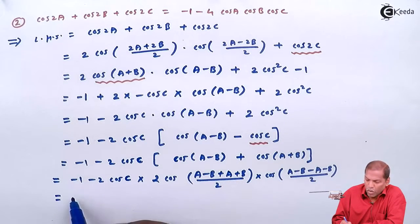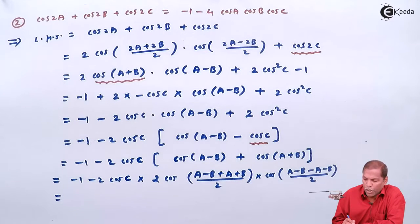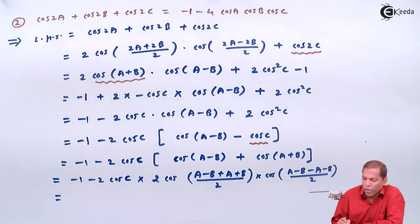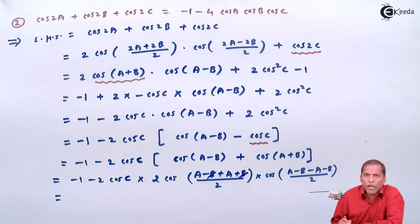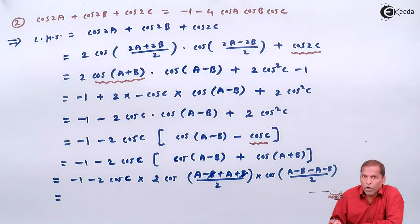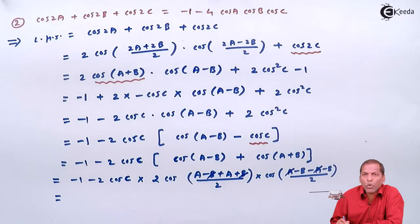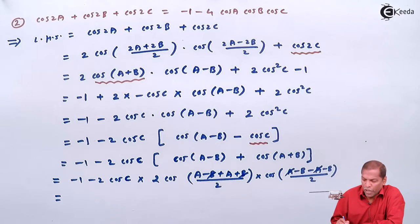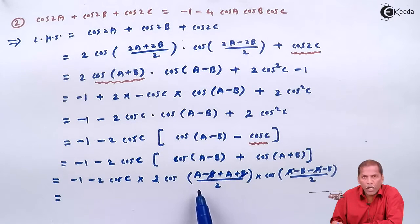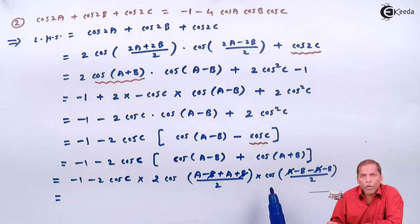So simplifying inside the brackets: in the first cosine, +b and -b cancel, giving cos(a). In the second cosine, -a and +a cancel, leaving cos(-b). So we get: -1 - 2·cos(c)·2·cos(a)·cos(-b), which equals -1 - 2·cos(c)·2·cos(a)·cos(-b).